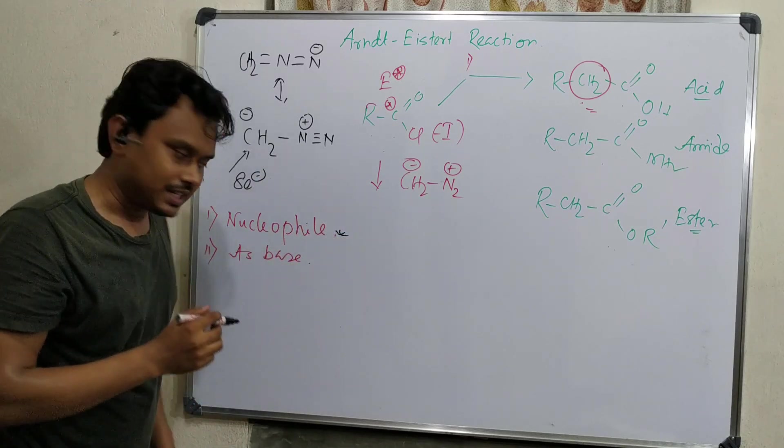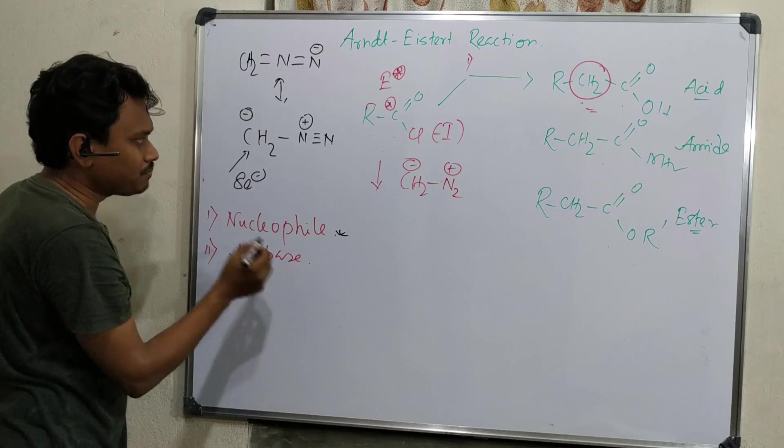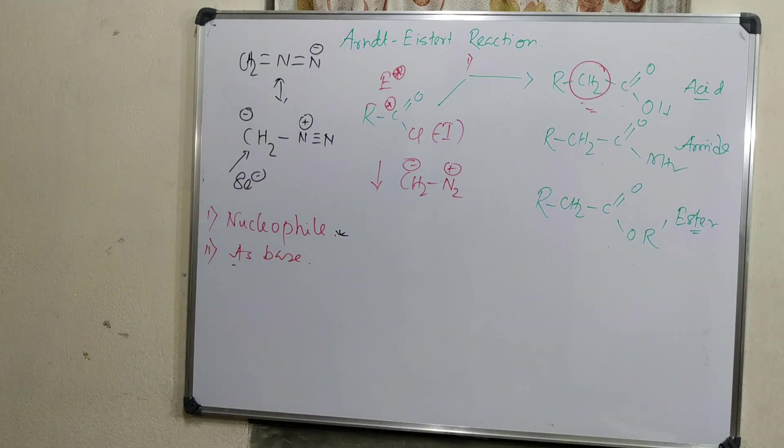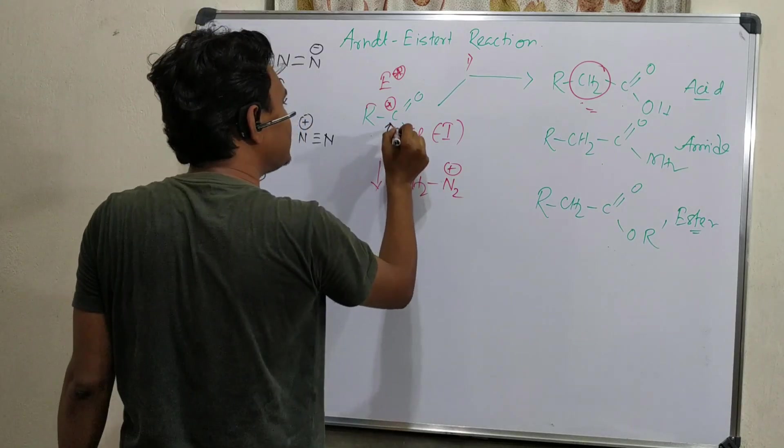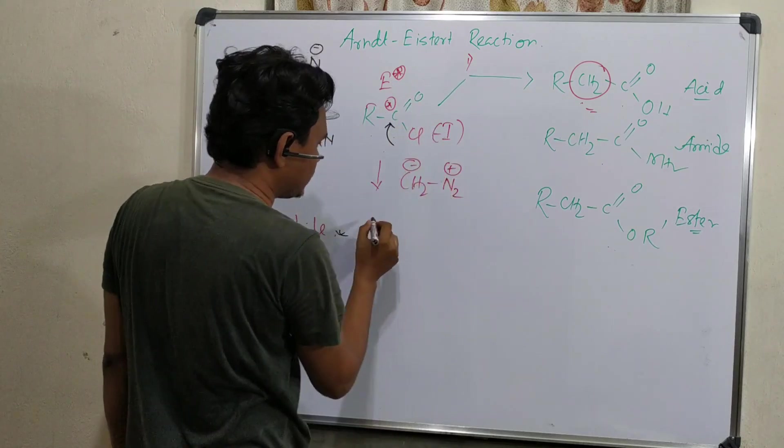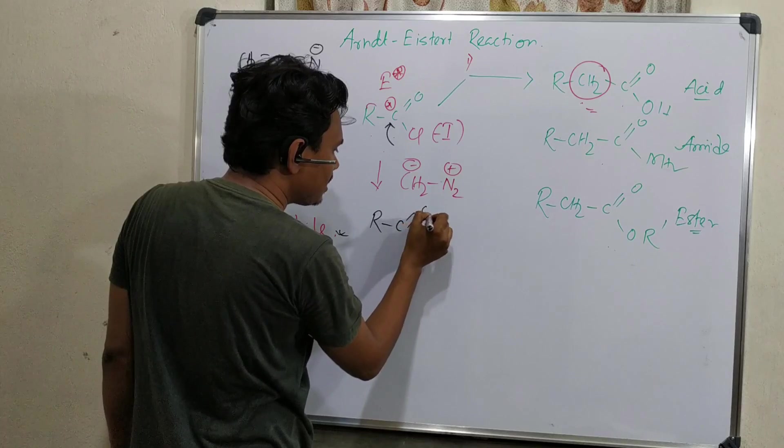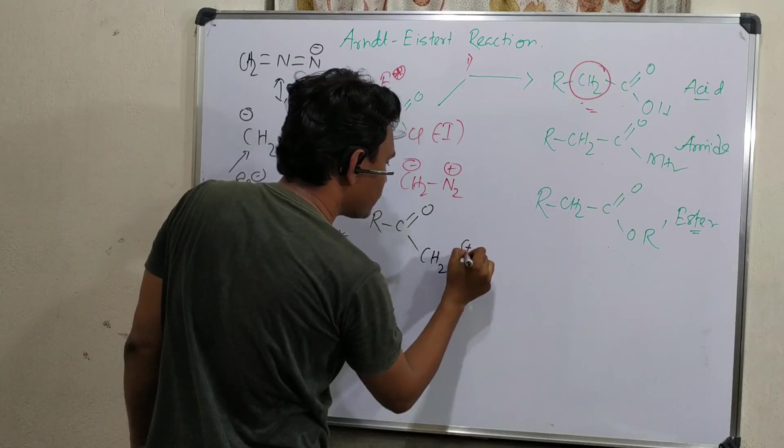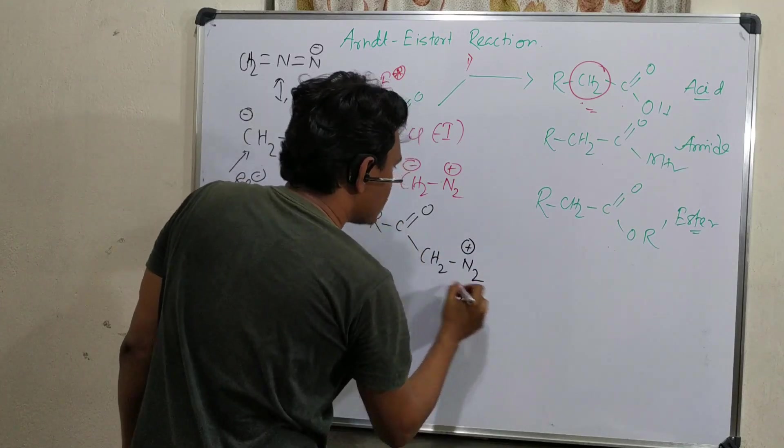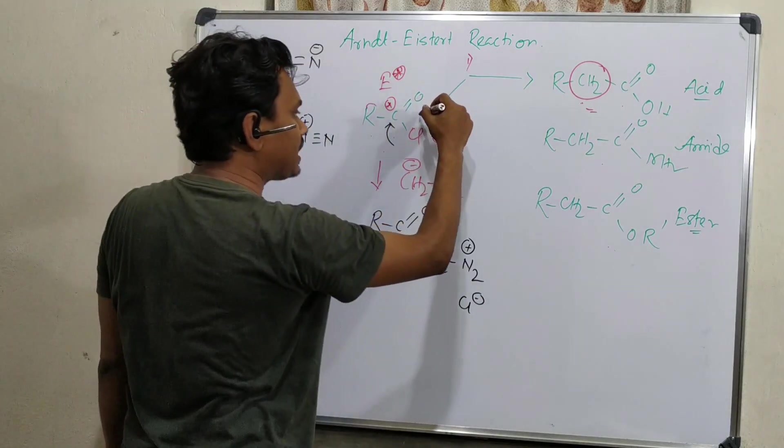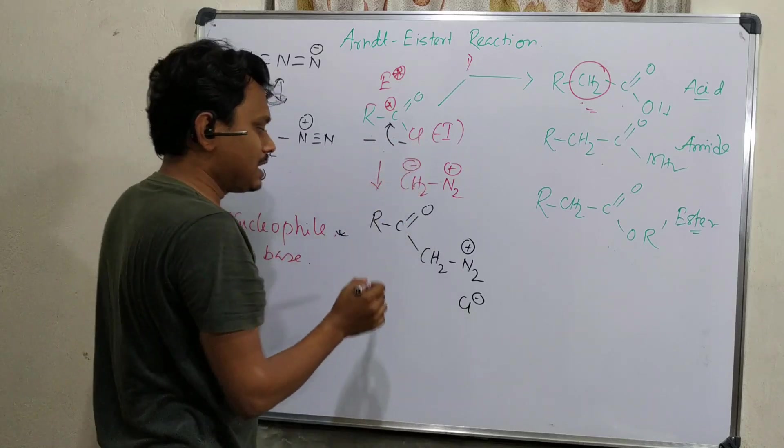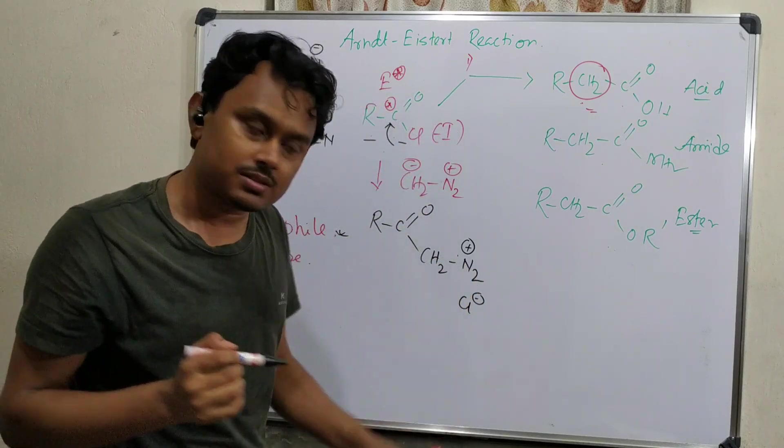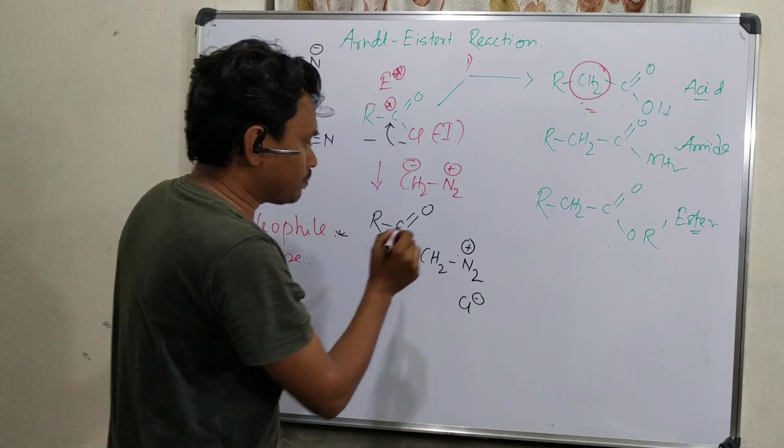First stage, it is acting as a nucleophile. If it acts as nucleophile, then what would happen? This goes and attacks at the carbonyl center because it is strongly electron deficient. So ultimately it produces RCOCH2N2+ plus Cl-. So first stage is production of acid chloride. Second stage, we have achieved production of diazo ketone.